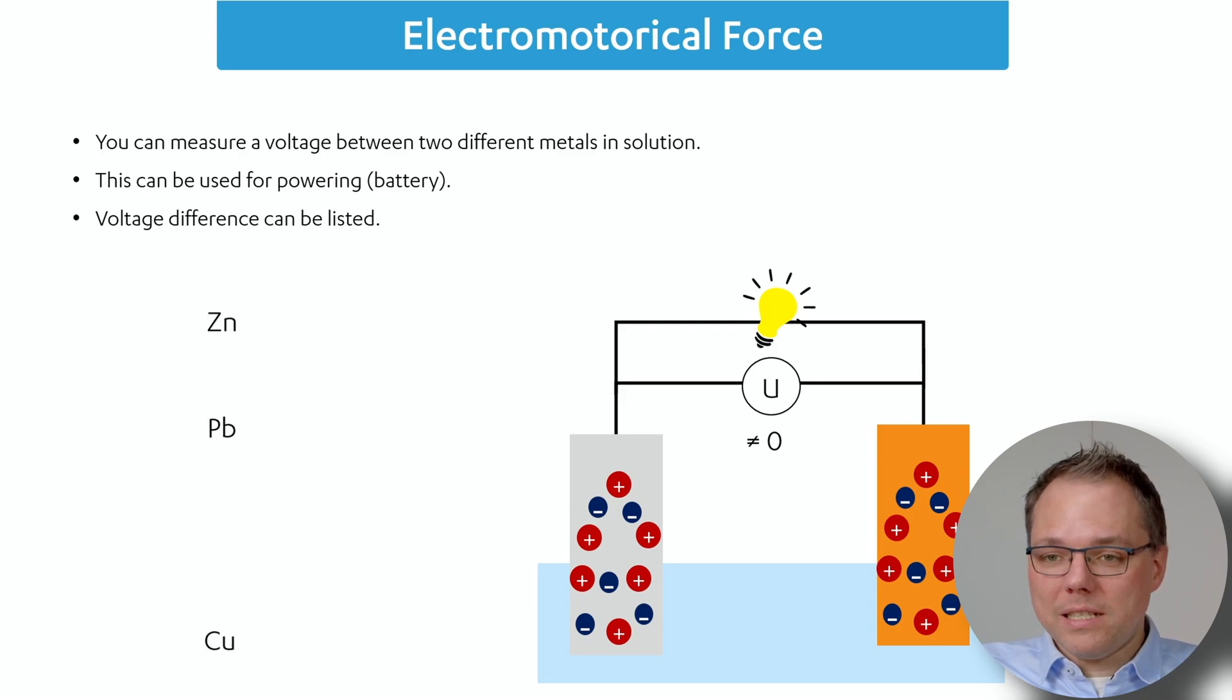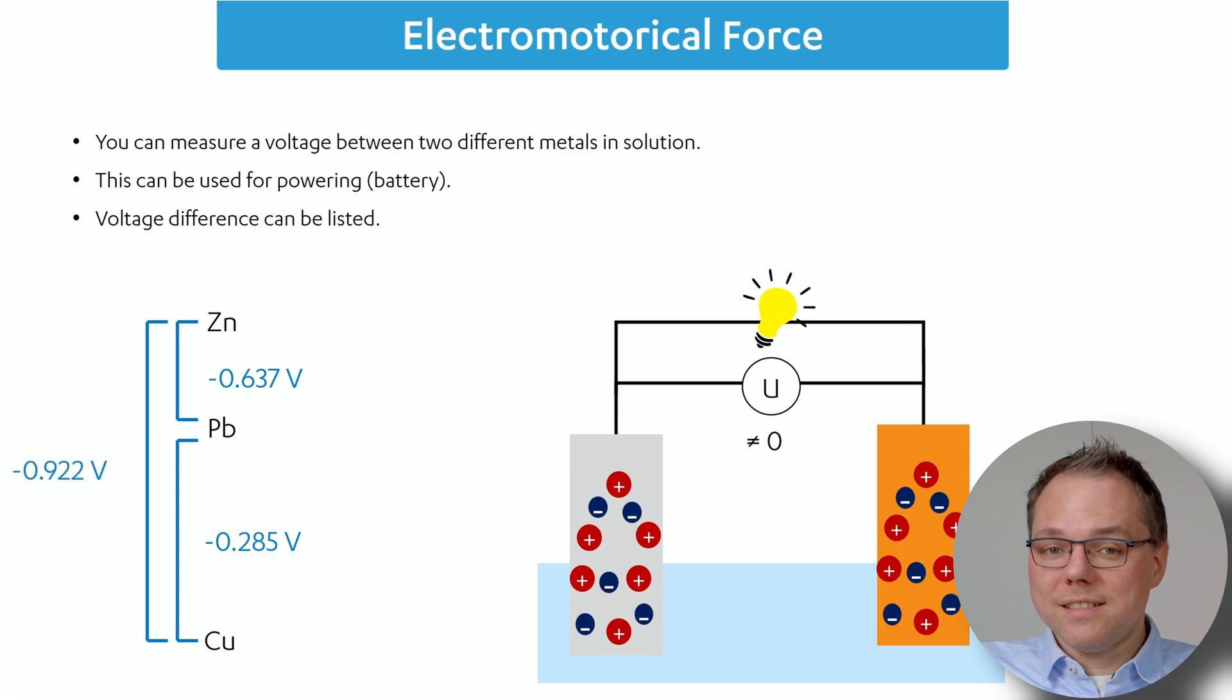Well, if we have three different metals and we measure between copper and lead and between lead and zinc, the potential differences, we can actually calculate the potential difference between copper and zinc, because it's just the sum of the two other ones. Now we can make long lists with all these potential differences. No, we can do something better. We agree on a zero point and we only have to list for each metal one potential.